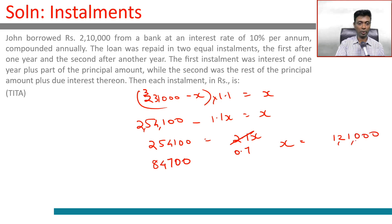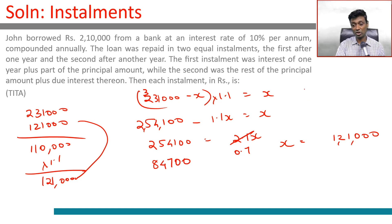From 2 lakh 10,000, this becomes 2 lakh 31,000. We repay 1 lakh 21,000. 1 lakh 10,000 that becomes 1.1 times of that, which is 1 lakh 21,000. These two are equal, so each installment is worth 1 lakh 21,000.